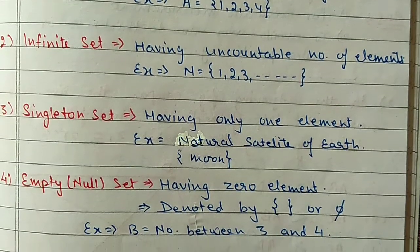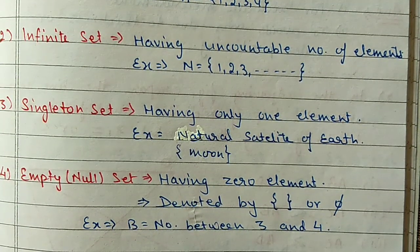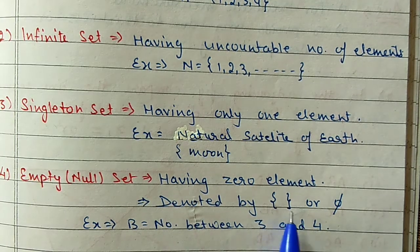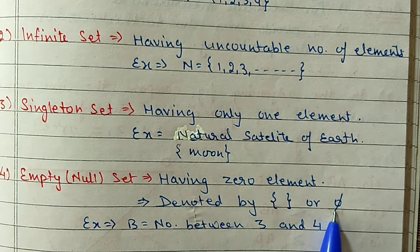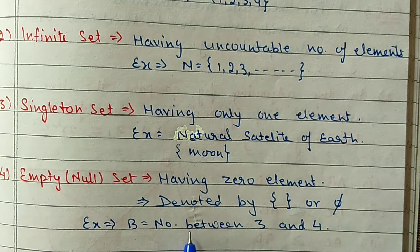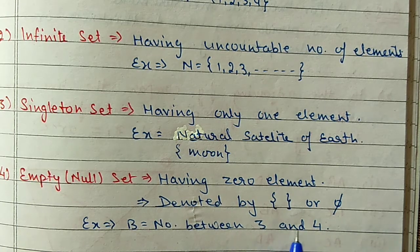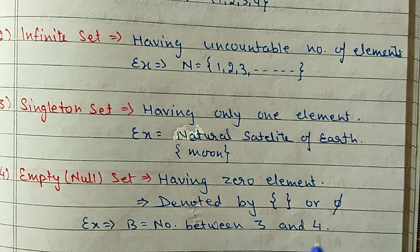The fourth type is the empty set. Empty set or null set means having no element - zero elements. We denote it by empty brackets or the phi symbol. For example, if I say natural numbers between 3 and 4 - between 3 and 4 we don't have any natural number, so our answer will be the empty set.